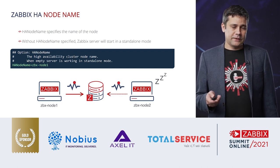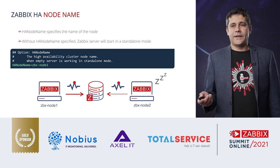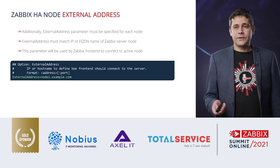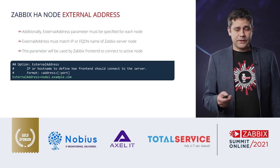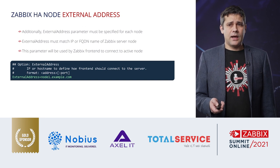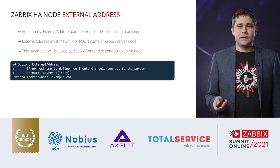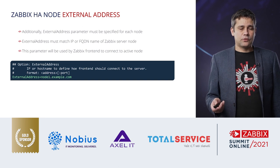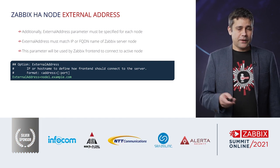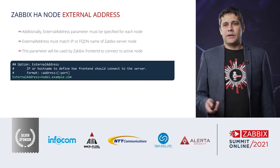Both nodes send a heartbeat to the database every five seconds. If one node fails, another node will take over. The second parameter you need is ExternalAddress — for example, node1.example.com. You need the external address because the Zabbix frontend needs to connect to Zabbix server, and this tells the frontend which address to connect to. This must be specified; otherwise the frontend may not work properly.